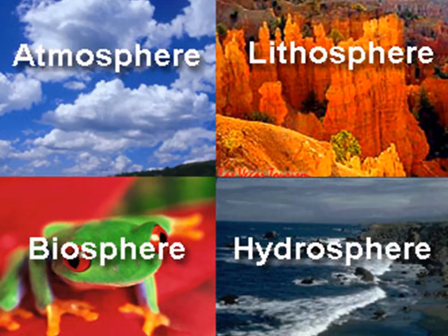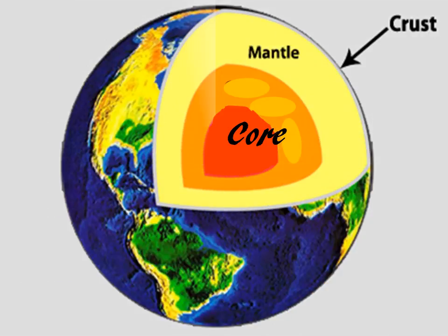The first one is lithosphere. The word lithosphere is derived from the Greek word lithos, which means stone or rock. It is the outermost solid and rigid part of the earth. Children, the earth has three layers.